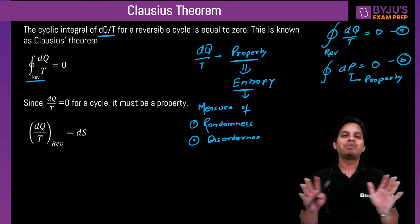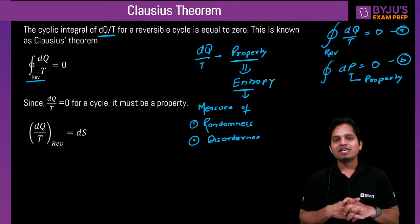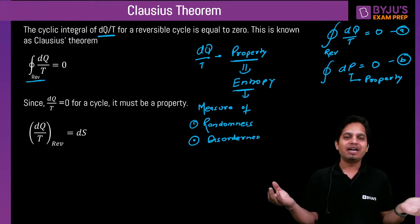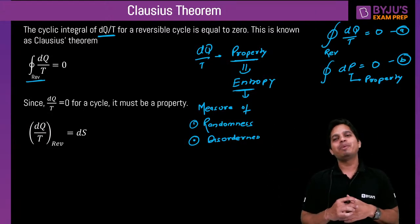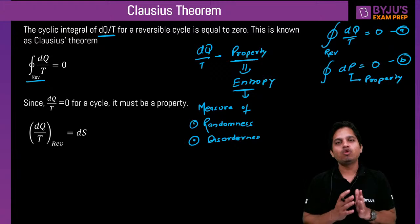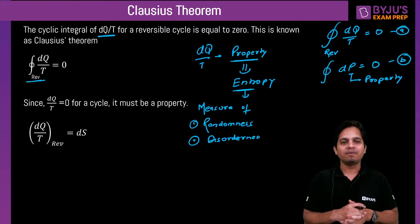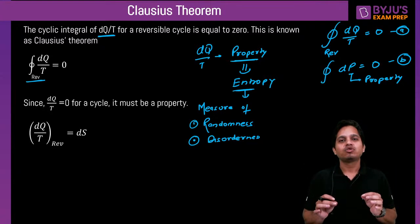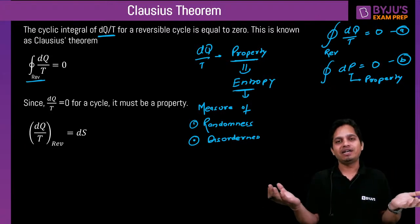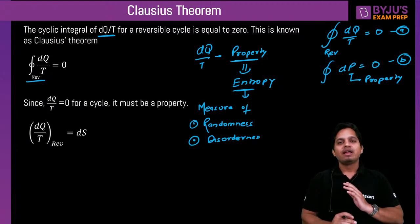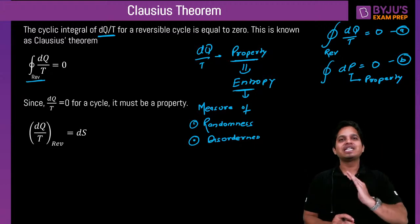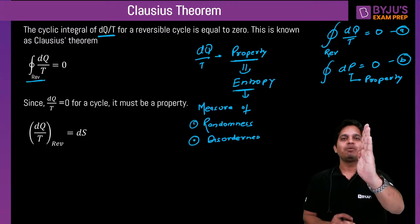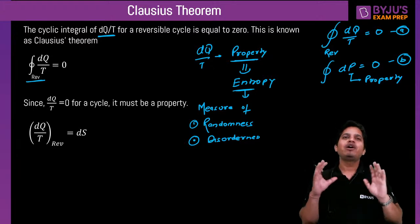dQ/T for a reversible system is defined as dS, where S is entropy. Now, Clausius inequality: for a cycle, the cyclic integral of dQ/T is always less than or equal to the cyclic integral of dS. Since entropy is a property, for a cycle, change in entropy equals zero. So I can say: cyclic integral of dQ/T is less than or equal to zero. This is very important and is only valid for a cycle.